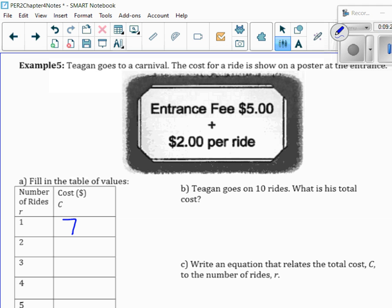So, it's going to cost him $7. Well, how much would it cost him for two rides? Well, again, it costs him $5 and then $2 for the first ride and another $2 for the second ride. So, that would be $9. So, what's happening each time? It's going up by an additional $2.